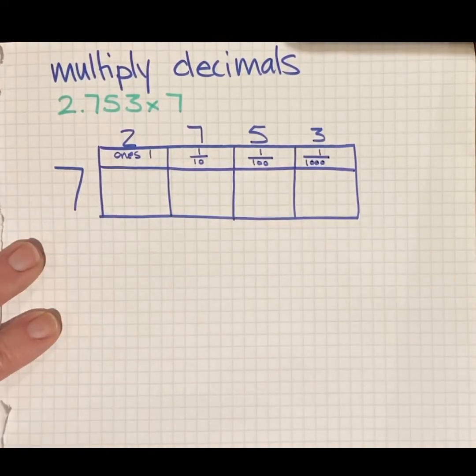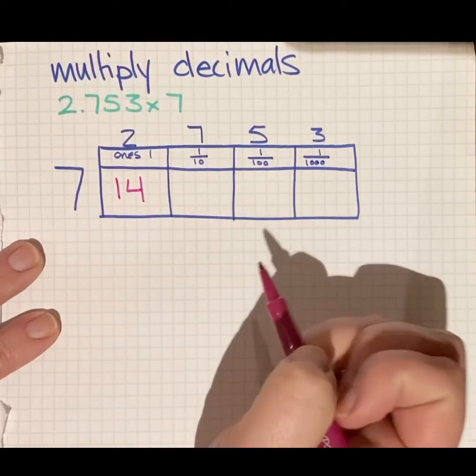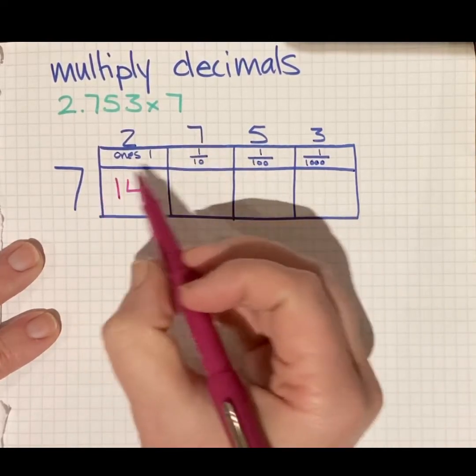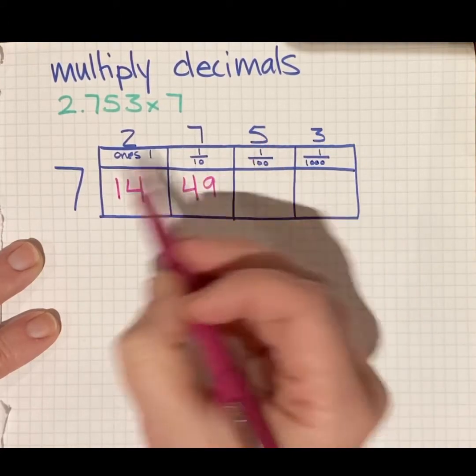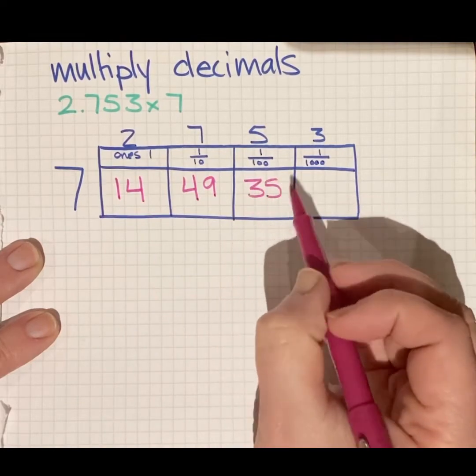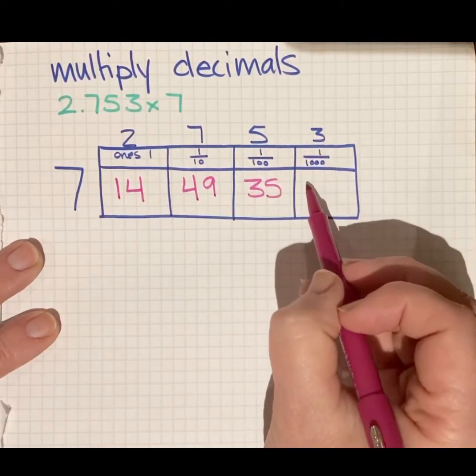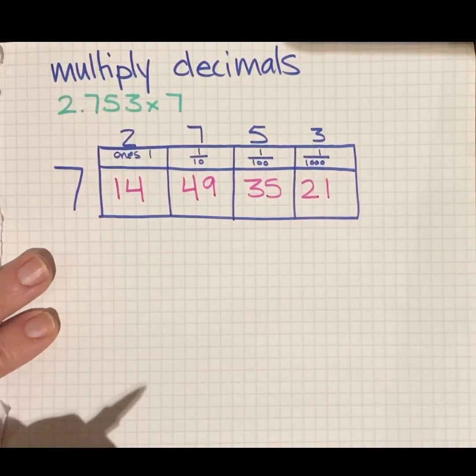Now I just need to do some simple multiplication. Seven times two gives me 14. Seven times seven is 49 tenths. Seven times five is 35 hundredths. And seven times three gives me 21 thousandths.